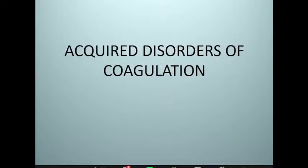We'll talk about disorders of coagulation. When we have coagulation disorders, we have congenital and acquired. Congenital disorders are inherited disorders of the coagulation factors, inherited disorders of platelet function, and others, which I believe have been covered. I'll talk about acquired disorders, principally disorders of the coagulation pathway.